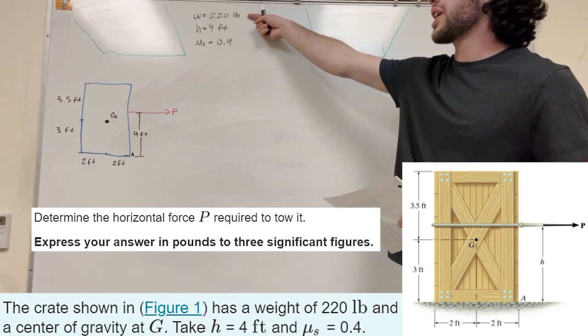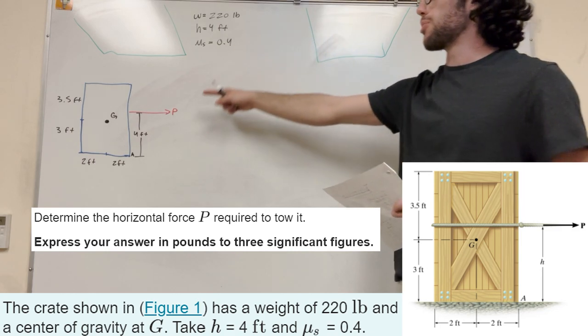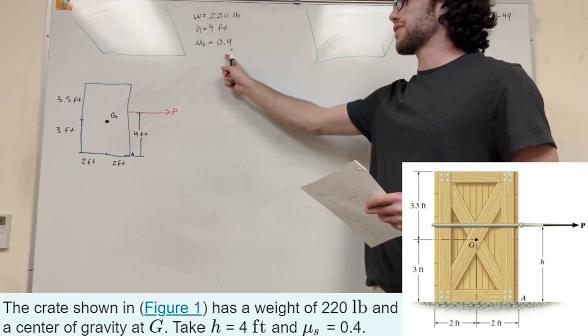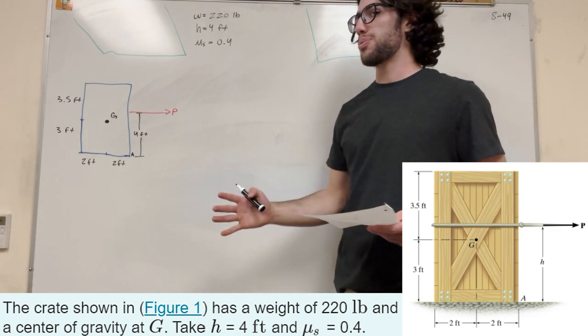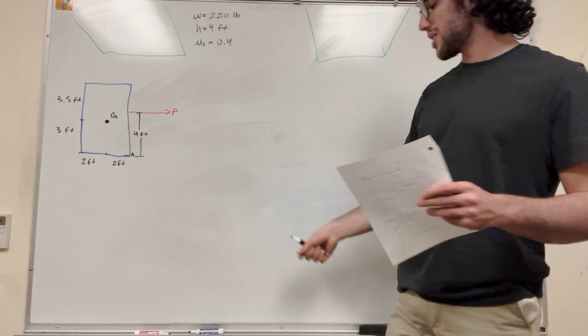Part A is asking for how much do you need to pull at P in order to tow this box. So really quick, we have these three numbers here. The weight of the box is 220 pounds. We're pulling four feet up, and the static friction between the box and the ground is 0.4, or the coefficient is. So let's go ahead and solve.